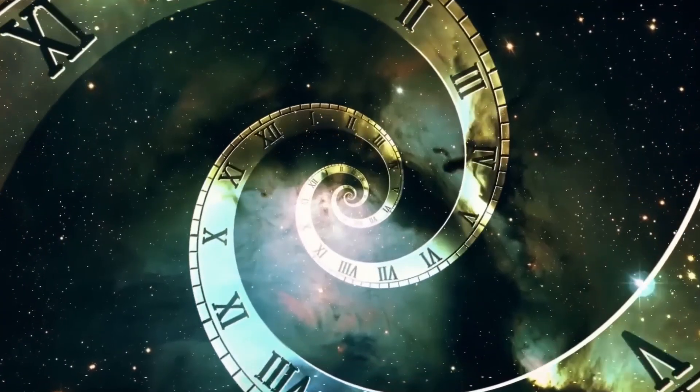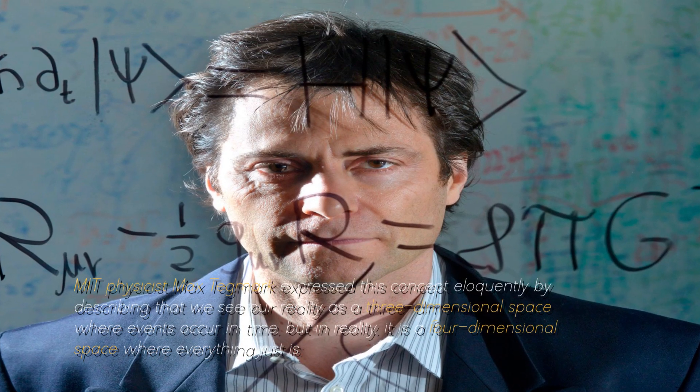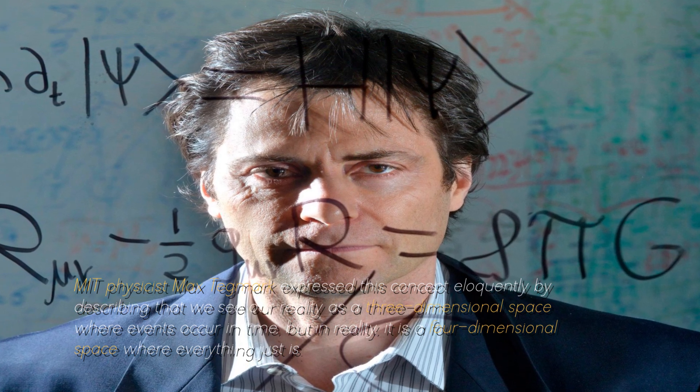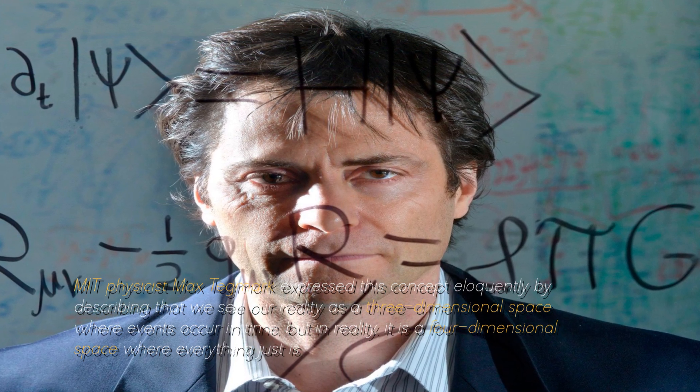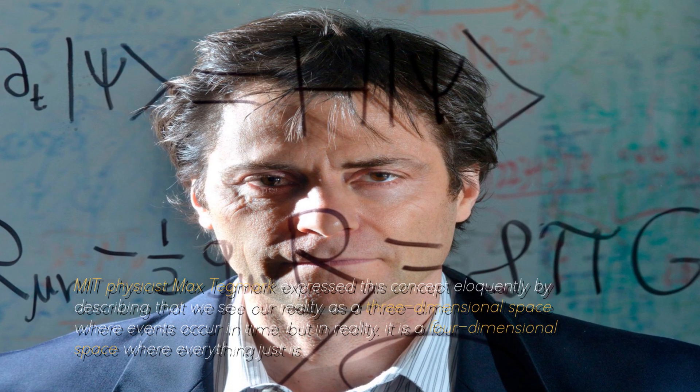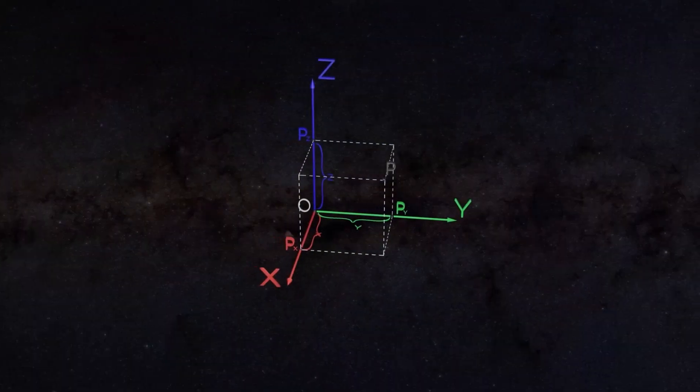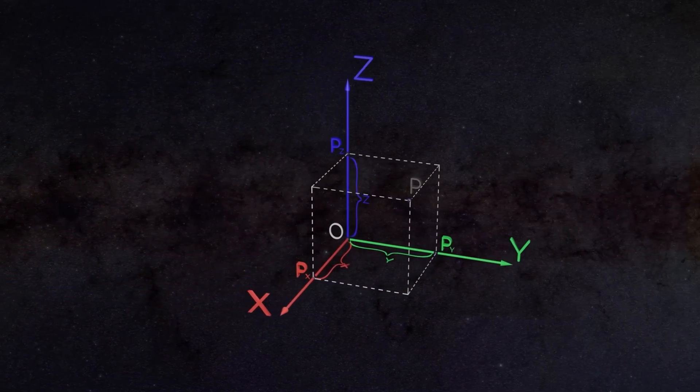So, what does this imply for us? In essence, it suggests that everything has a reality as solid as the present moment, and that the past and the future exist somehow somewhere in space-time. MIT physicist Max Tegmark expressed this concept eloquently by describing that we see our reality as a three-dimensional space where events occur in time, but in reality it is a four-dimensional space where everything just is. If this approach were true, then time would be revealed as an illusion, since nothing would undergo real change. Past, present, and future would coexist constantly.